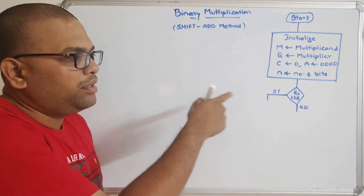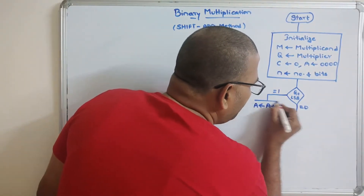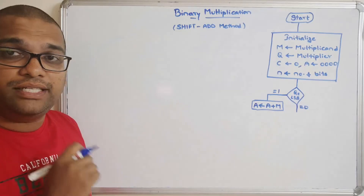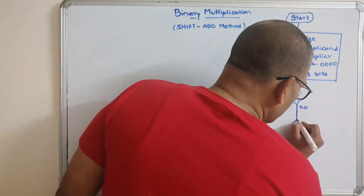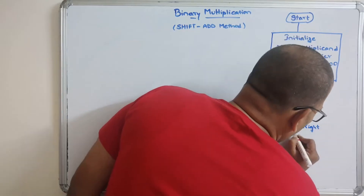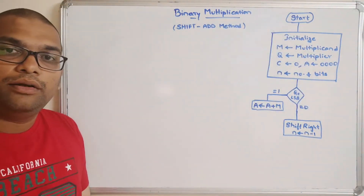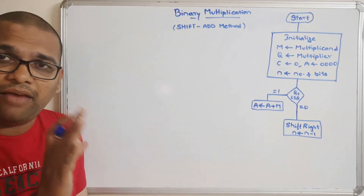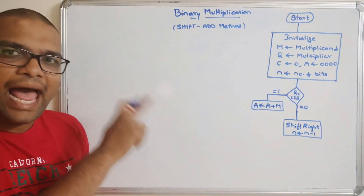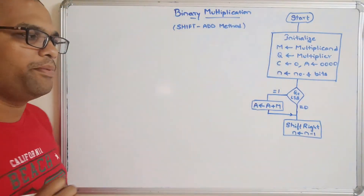If Q0 is equal to 1, we have to perform the add operation: add the multiplicand value to the accumulator and store the result back in the accumulator. If Q0 is equal to 0, apply the shift-right operation and decrement N by 1. So there are only two options from the condition: if equal to 1 perform add then shift; if equal to 0 directly perform shift.